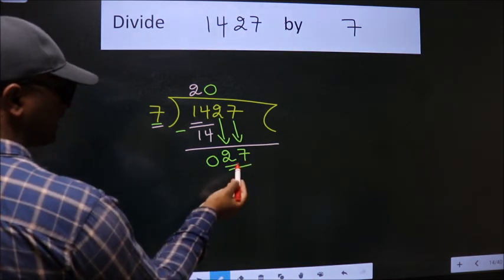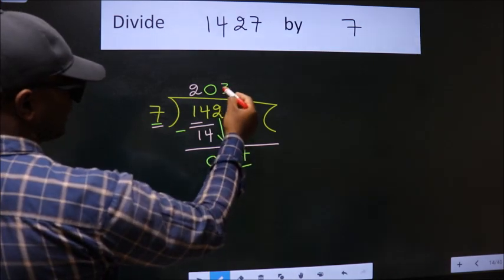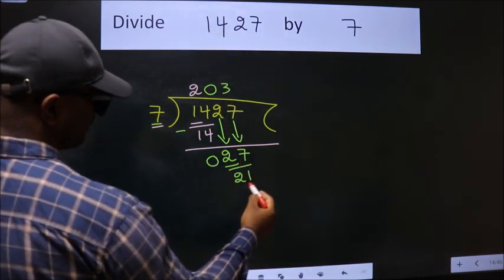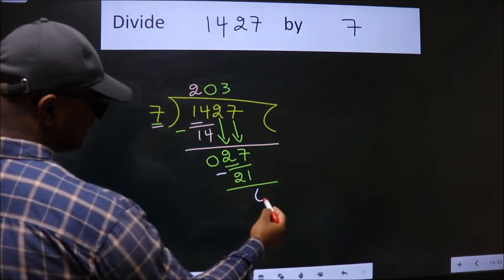A number close to 27 in 7 table is 7 threes, 21. Now, we subtract. We get 6.